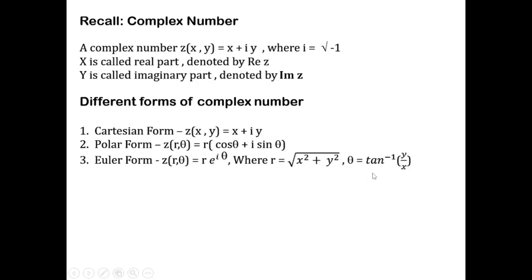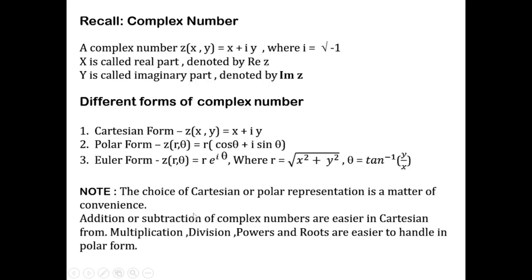And θ is the amplitude of the complex number or argument, given by tan⁻¹(y/x). Note that the choice of Cartesian or polar form of the complex number is just a matter of convenience. If you are doing addition or subtraction of two complex numbers, it is easier in Cartesian form.